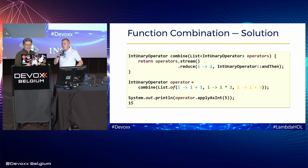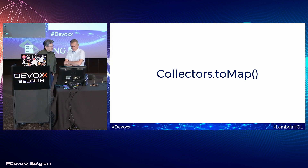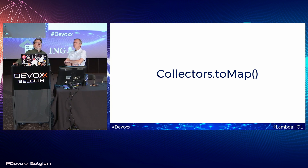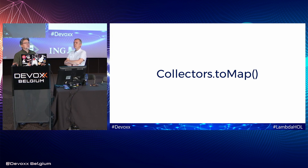Let's move on to collectors. There's a rich family of terminal operations you can put at the end of a stream. Beyond forEach and collecting to lists and sets, there's a very large family of collector implementations already in the JDK. A lot of people stop at collect-to-list or collect-to-set, but there's an extremely rich set of other collectors. We'll be taking a tour through several of them. The first one is collectors.toMap.